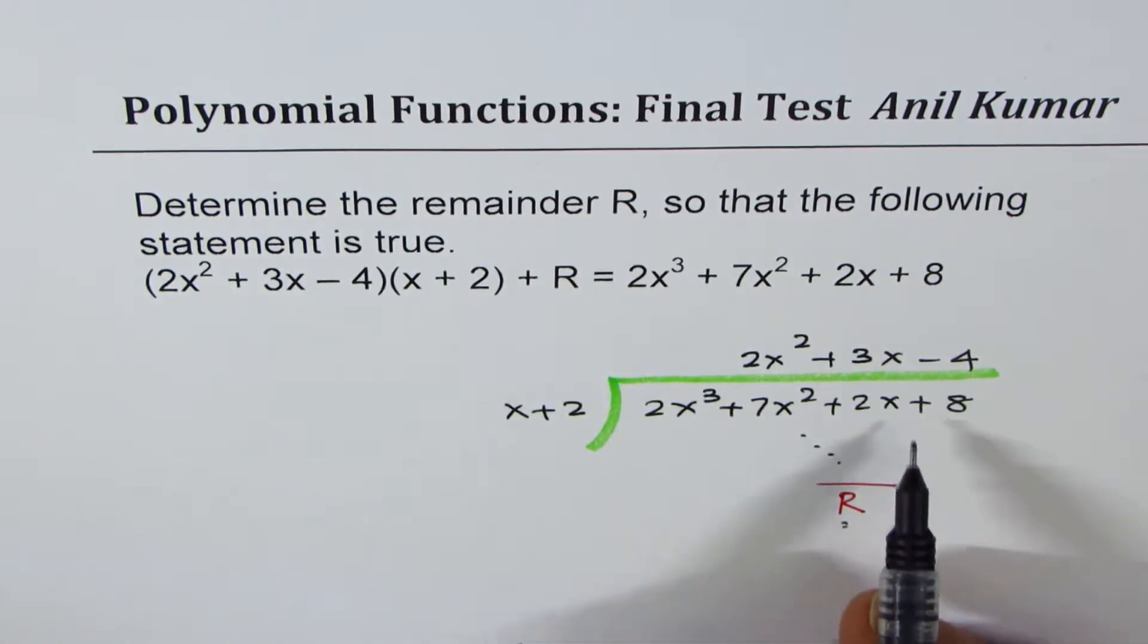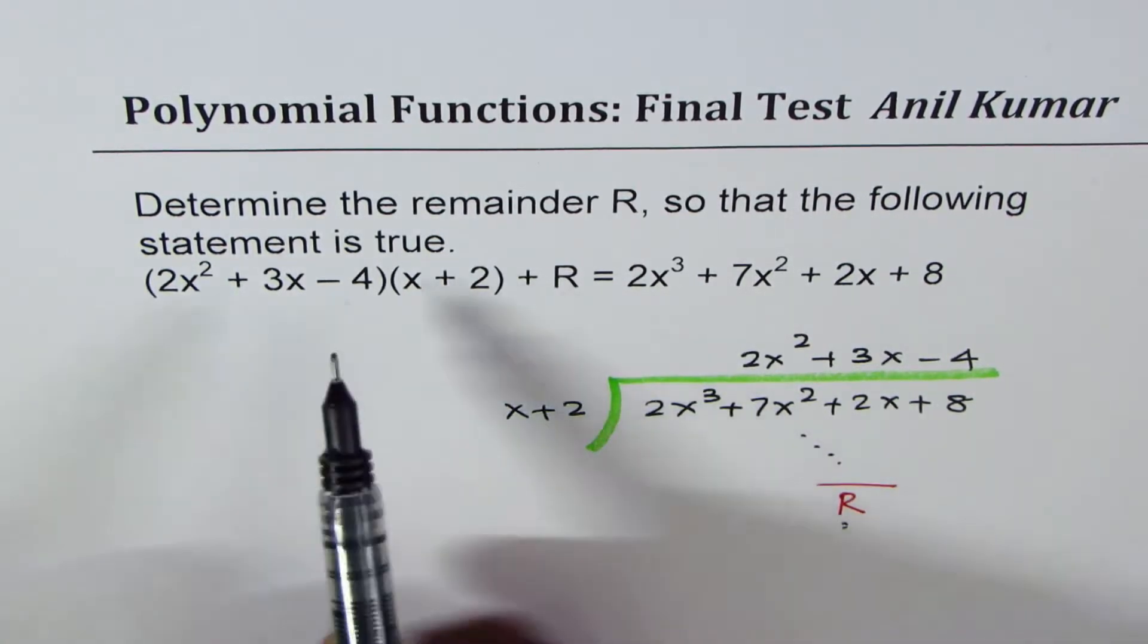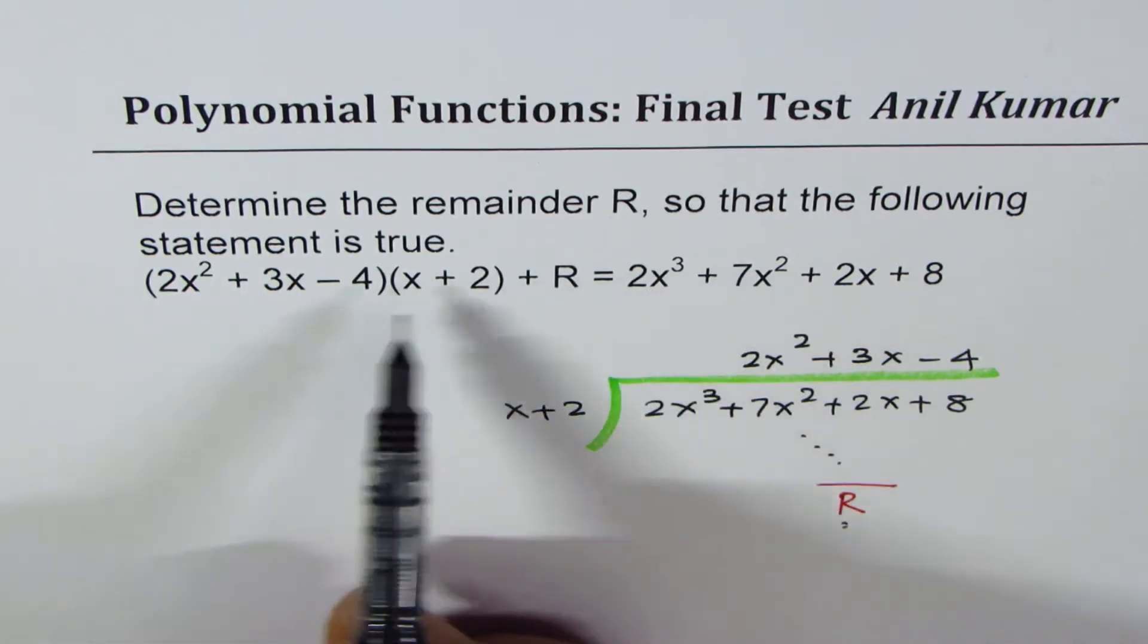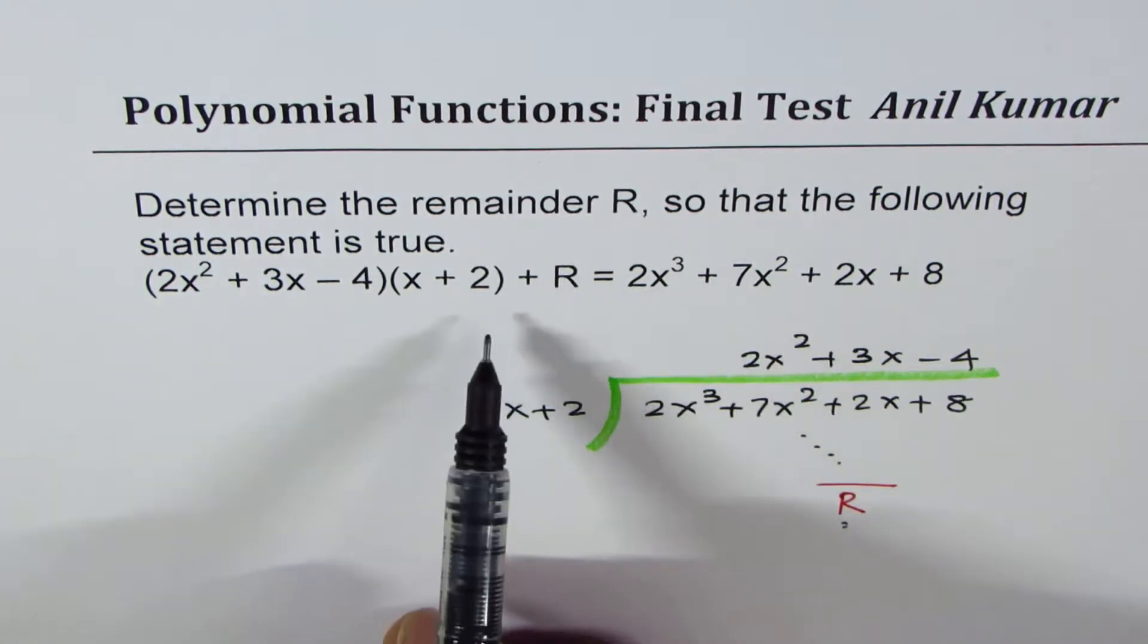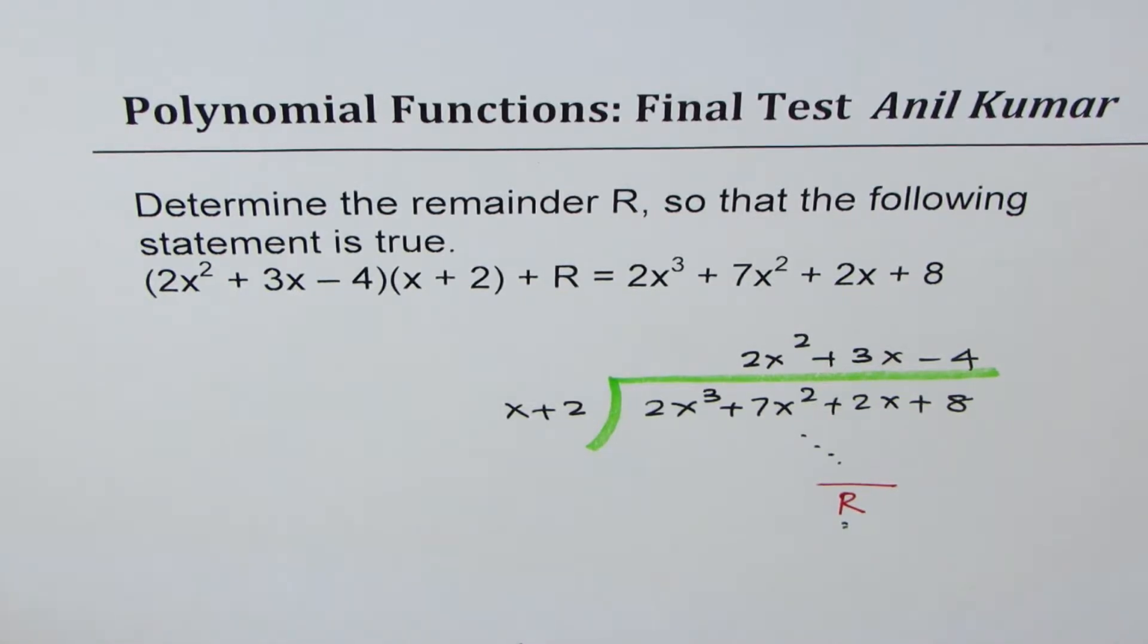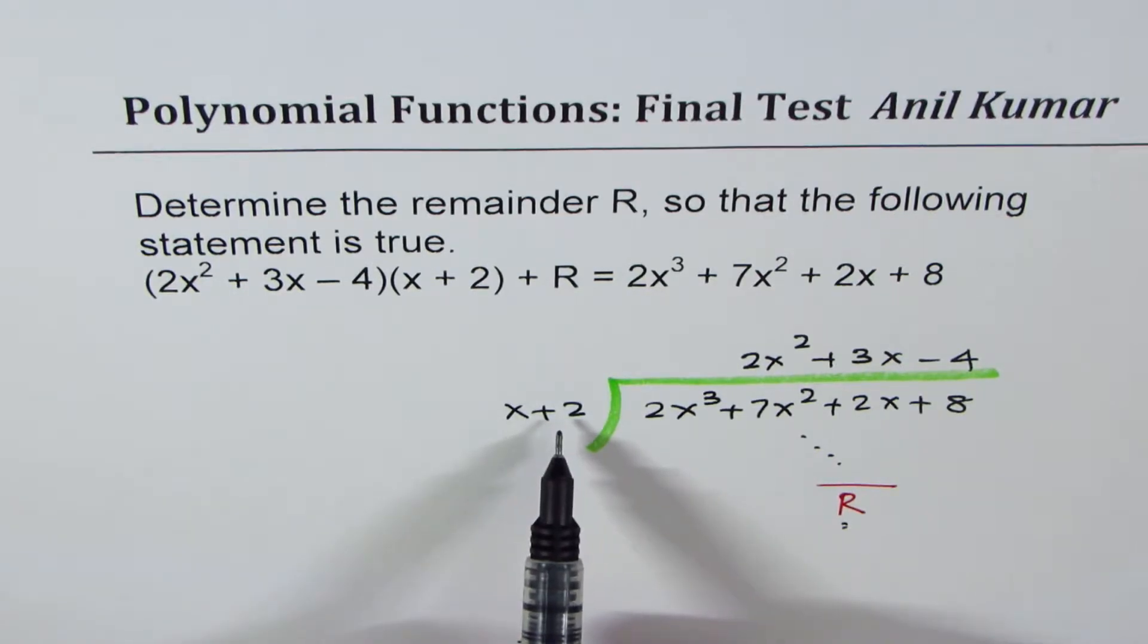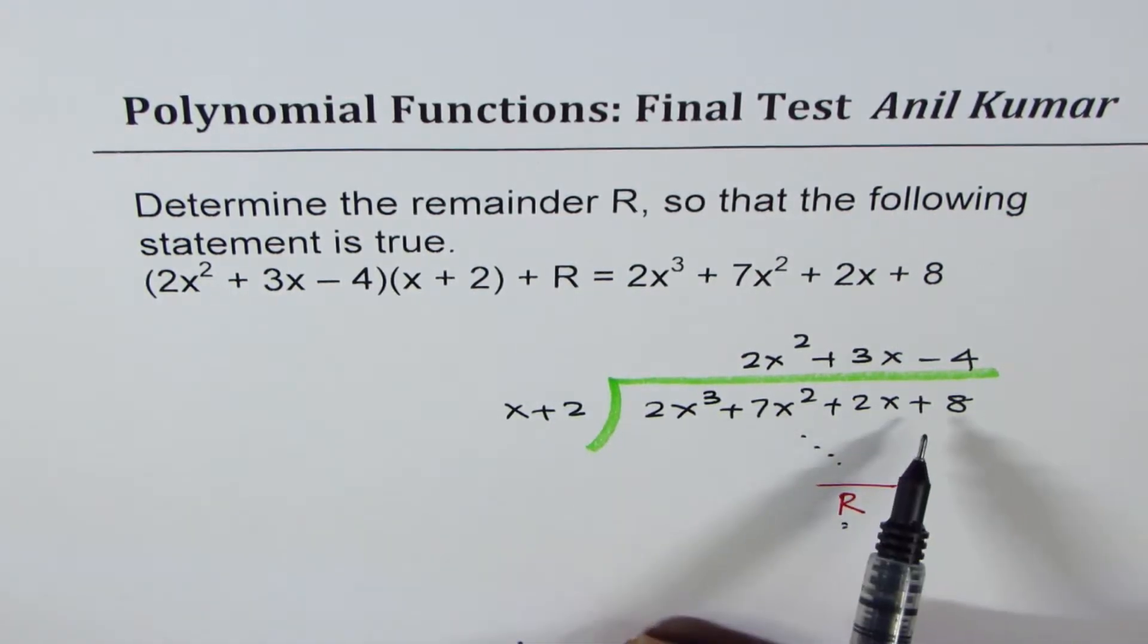Does it remind you of something? Can you find R without expanding, rearranging, and spending at least 5 minutes on that, with high likelihood of getting a wrong answer? The easy way is actually find the value of this function for x equals minus 2. That should be the remainder.